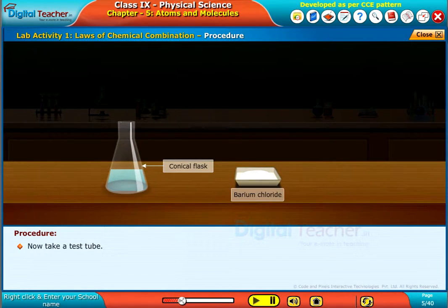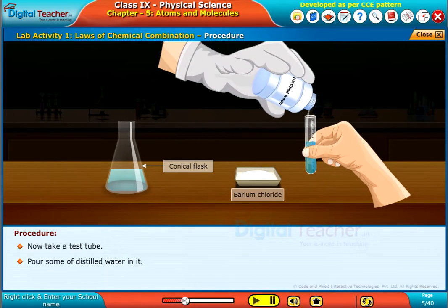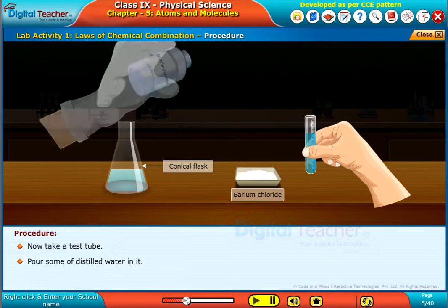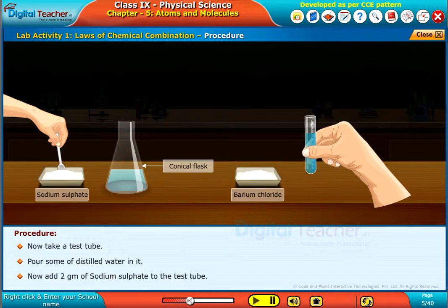Now take a test tube. Pour some distilled water in it. Now add 2 grams of sodium sulfate to the test tube.